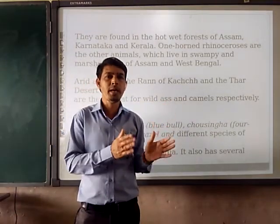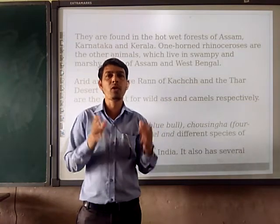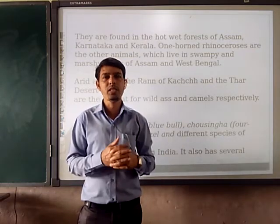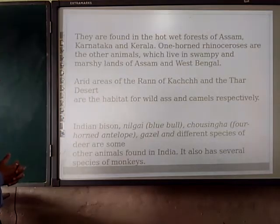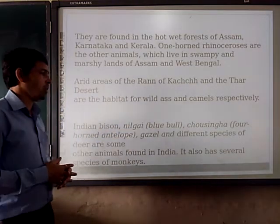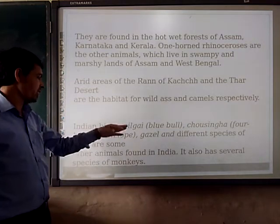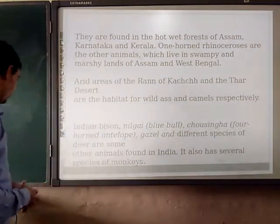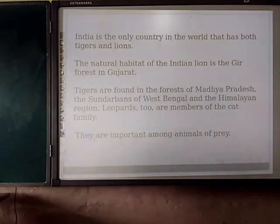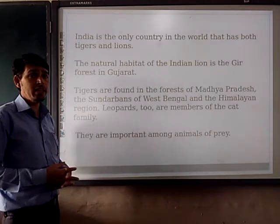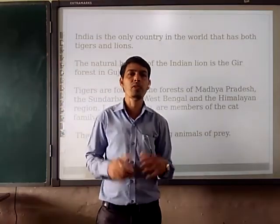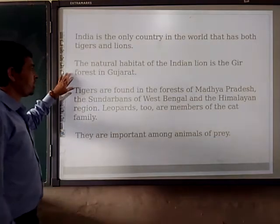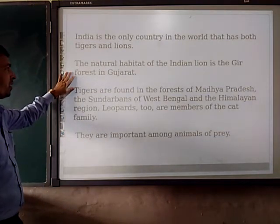As I am explaining, different types of vegetation are there. But now we are talking about the wildlife — which type of animals we are having in different areas of India. India's Bison, Nilgai that is the Blue Bull, Chousingha, Blackbuck, and Antelope — these are the animals that are found. India also has species of different types of monkeys. India is the only country in the world that has both tiger and lion. The Gir forest is having the last habitat of Asiatic lion in the world. The natural habitat of Indian lion is the Gir forest in Gujarat.